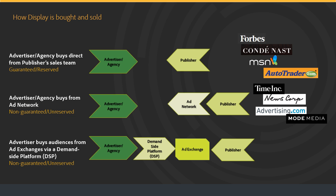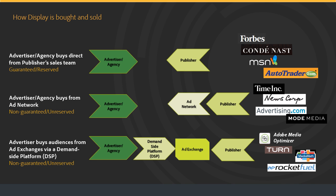The last most common way display is bought and sold is an advertiser buys from the ad exchange using a demand-side platform. The inventory is non-guaranteed. The demand-side platform is a technology that an advertiser uses to reach the ad exchange to bid on the inventory they want to get at a fair price. Examples of demand-side platforms include Adobe Media Optimizer, Turn, Media Math, and Rocket Fuel. Examples of ad exchanges include the Google Ad Exchange, Microsoft Ad Exchange, Rubicon, AppNexus, and others.